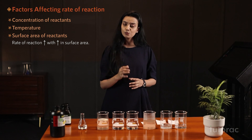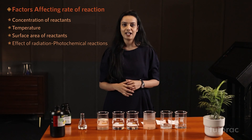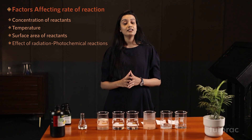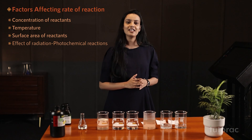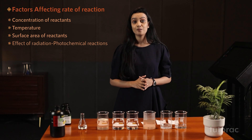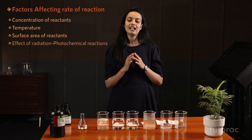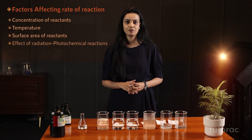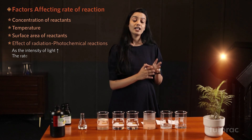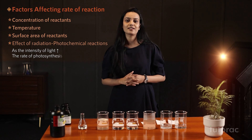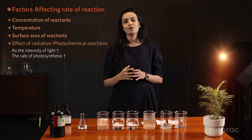That means with an increase in surface area of reactants, the rate of reaction increases. Moving towards another category: photochemical reactions. The best example to explain this is photosynthesis. You can see a plant here — for photosynthesis, one important thing needed is sunlight. As the intensity of light increases, the rate of photosynthesis increases. This is how radiation affects the rate of reaction.